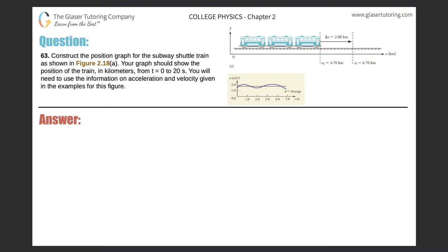Number 63. Construct the position graph for the subway shuttle train as shown in figure 2.18a. The graph should show the position of the train in kilometers from t equals 0 to 20 seconds. You will need to use the information on acceleration and velocity given in the examples for this figure.